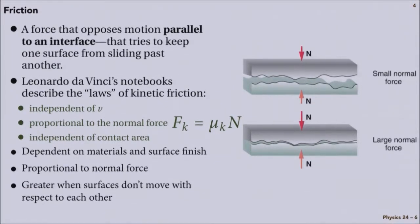Kinetic friction is a force that opposes motion parallel to an interface between two surfaces. It tries to keep the surfaces from sliding past one another.